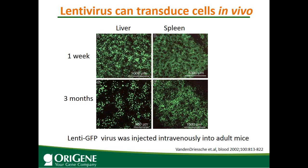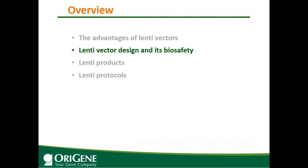This is available in vivo transduction data. Lentiviral GFP virus was injected intravenously into adult mice via blood vessels. One week later, in both liver and spleen, you see very nice GFP expression. And even three months later, you still see very nice GFP, showing that lentivirus has been stably integrated into the host genome. This data shows that lentivirus can be used in vivo in animal models.